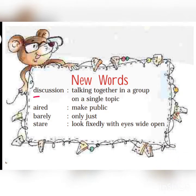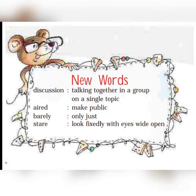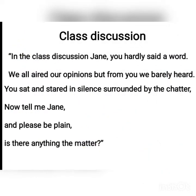The first word is 'discussion' — it means talking together in a group on a single topic. The second word is 'add' — it means make a pick. The next word is 'barely' — it means only just. The last word is 'stare' — it means to look fixedly with wide eyes. Now let's see the text.